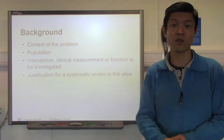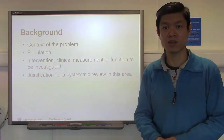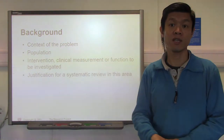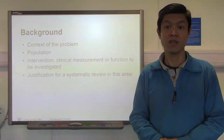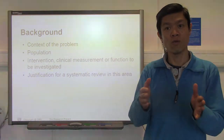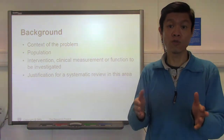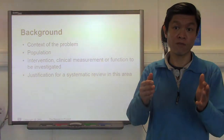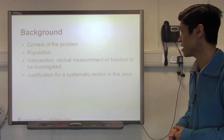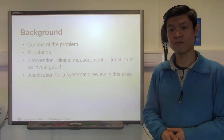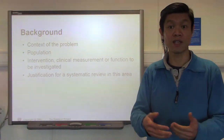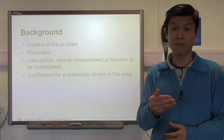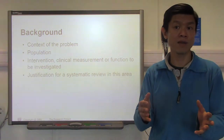The reason for that is because later on in the methods section of your protocol, you'll be writing out your inclusion and exclusion criteria, and the population is one parameter that you'll be defining quite clearly. That will help you narrow down the number of papers you get in order to conduct a systematic review. Next, what is the intervention, clinical measure, or perhaps a function to be investigated? You need to state that very clearly as to what concept or outcome measure you're trying to address — is it pain, is it quality of life, or something else?